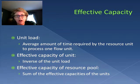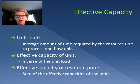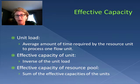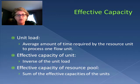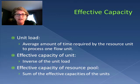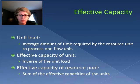So we have the time, we take the inverse, and we have the effective capacity. Now if we have a bunch of washers together, that means the effective capacity is that of all of those washers combined. So it's not just how long it takes one individual washer — we can get two done per hour. If we have a bunch of them, it's two per washing machine per hour. So that's the effective capacity of the resource pool.